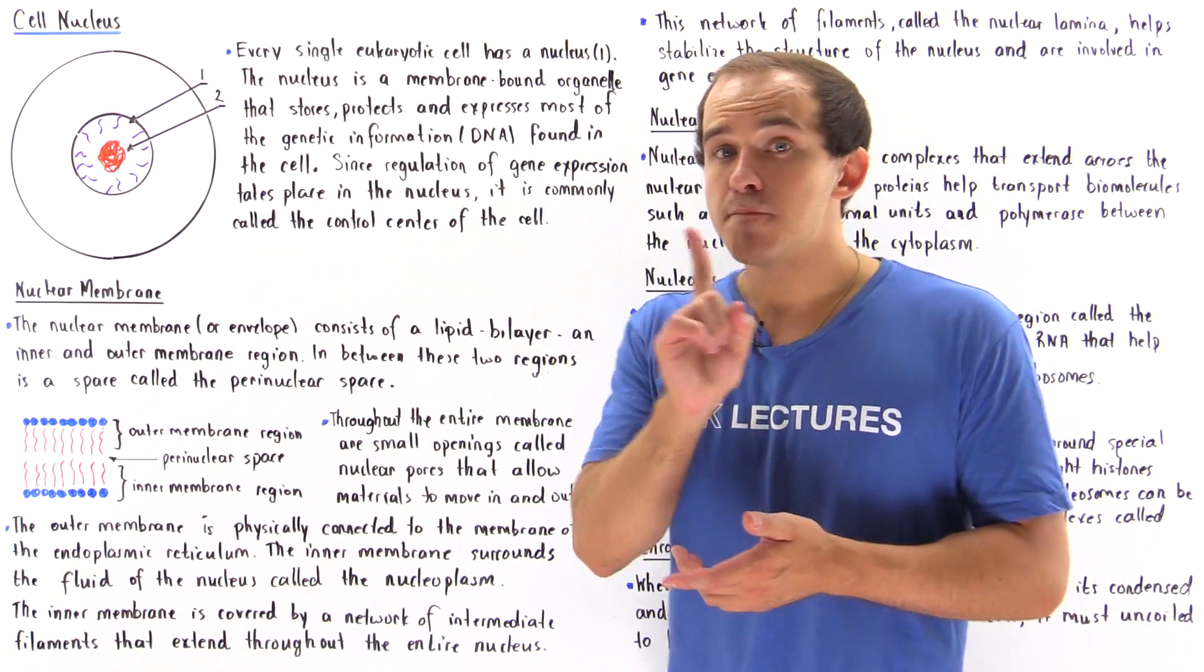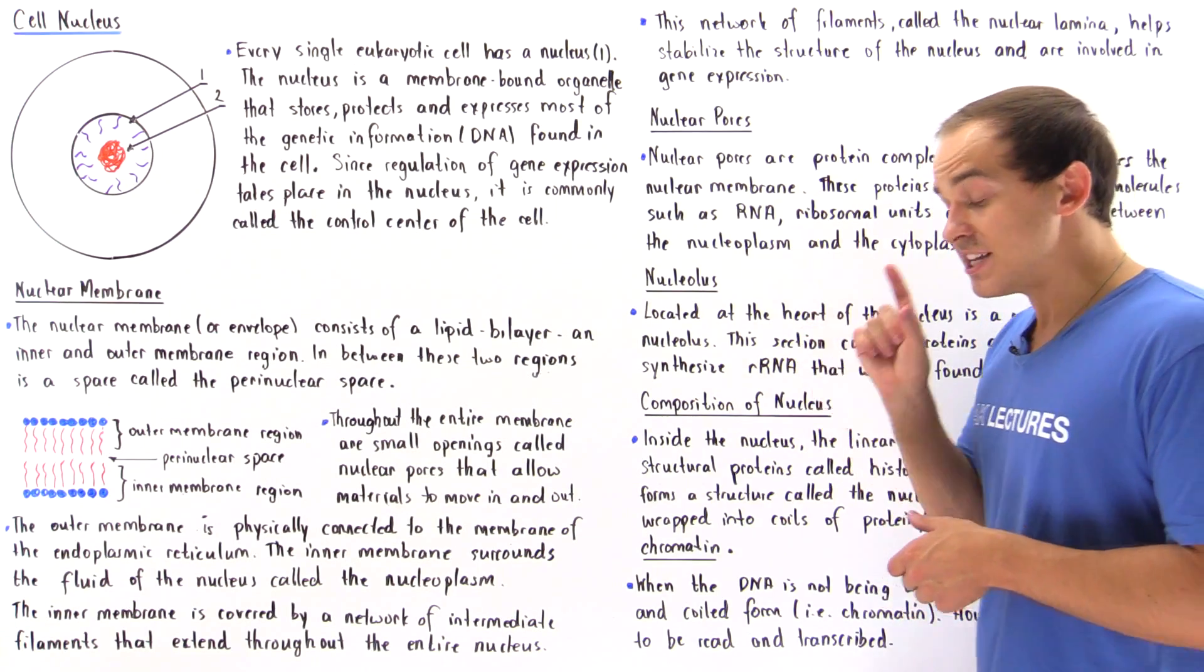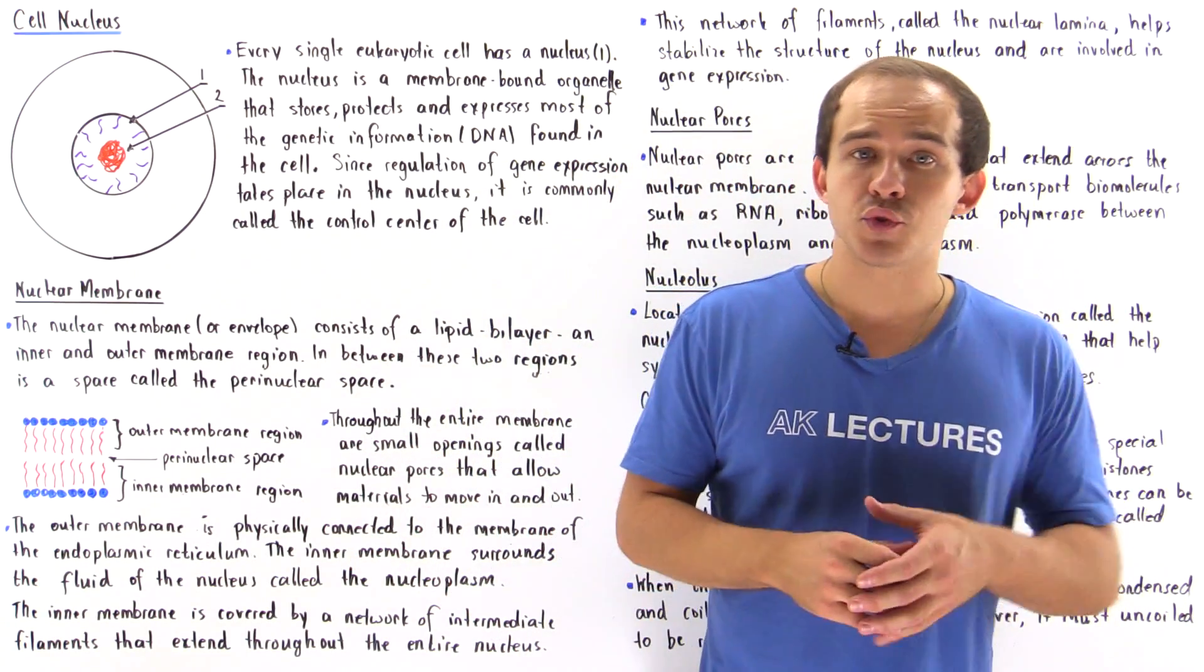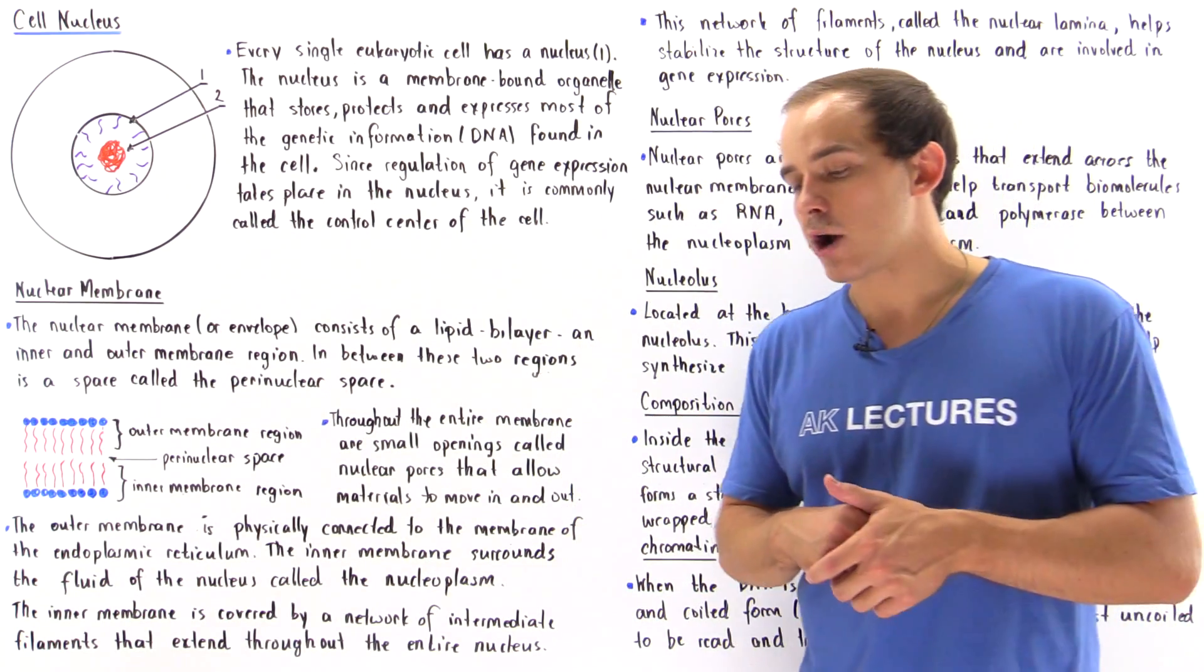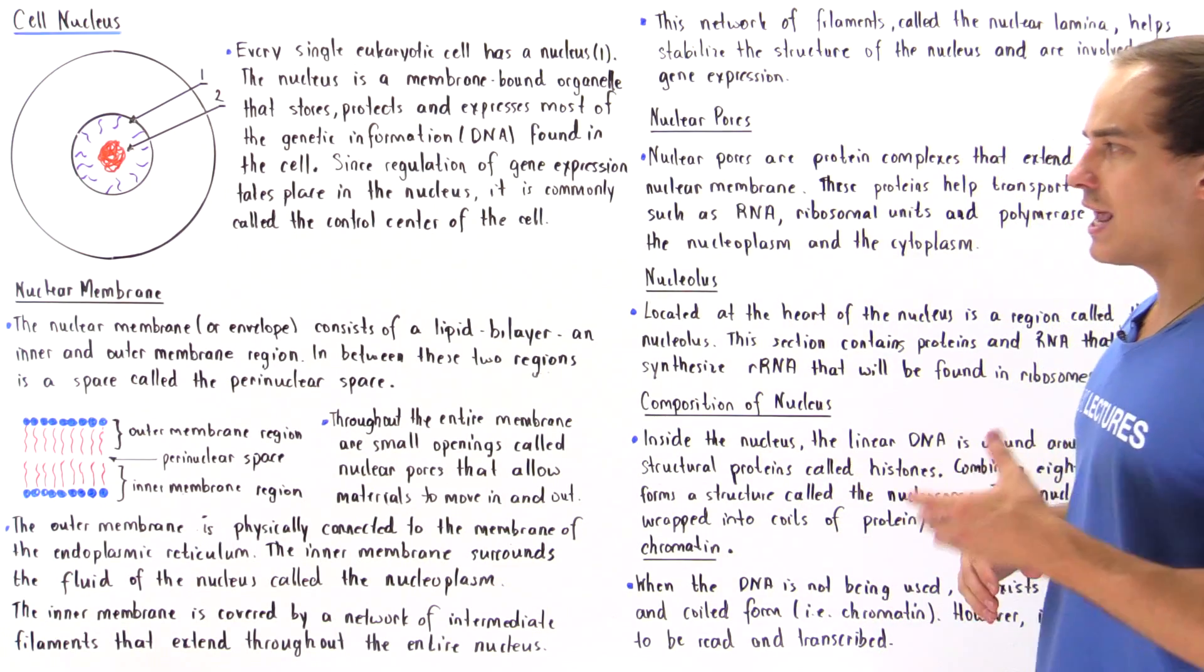The reason I say most and not all is because actually a small portion of the DNA is found in the mitochondria, which is another membrane-enclosed organelle found in our body. We'll discuss that when we look at the mitochondria and its structure.